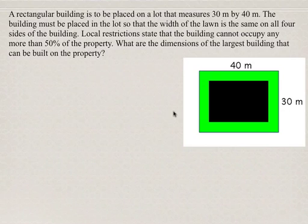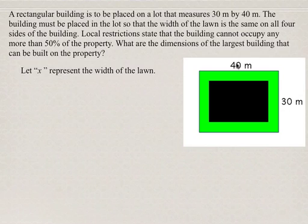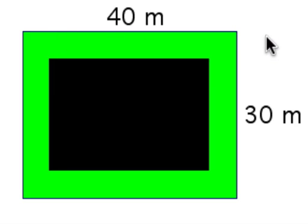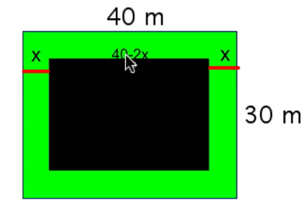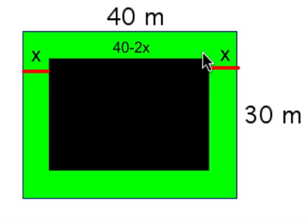The first thing we're going to do is assign a variable: let x represent the width of the lawn. Looking at the diagram, the length of this side of the property is 40 meters. The width of the lawn on each side is x meters, and since the building is centered on the property, the lawn on the opposite side is also x meters. So the length of the building is 40 minus 2x — that's the 40-meter property length minus the two lawn widths.